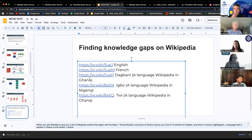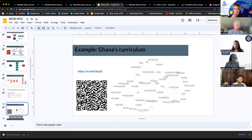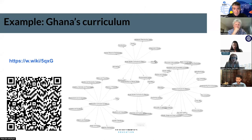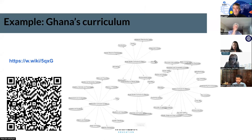Similarly, you can see the knowledge graph of how this curriculum looks on Wikidata. You can download all this data and use it for tech investment, for aligning open educational resources with school curriculum. If any OER organization wants to use this data to see what open educational resources could be mapped to Ghana's school curriculum, they can do that.